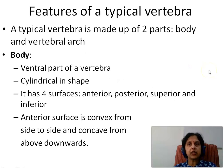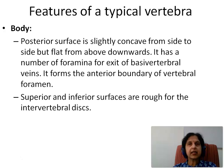Let us now see features of a typical vertebra. A typical vertebra is made up of two parts: the body and the vertebral arch. The body is the ventral part of the vertebra, cylindrical in shape, and has four surfaces: anterior, posterior, superior and inferior. The anterior surface is convex from side to side and concave from above downwards. The posterior surface is slightly concave from side to side but flat from above downwards, and has a number of foramina for exit of the basivertebral veins. The superior and inferior surfaces of the body are rough for the intervertebral discs.